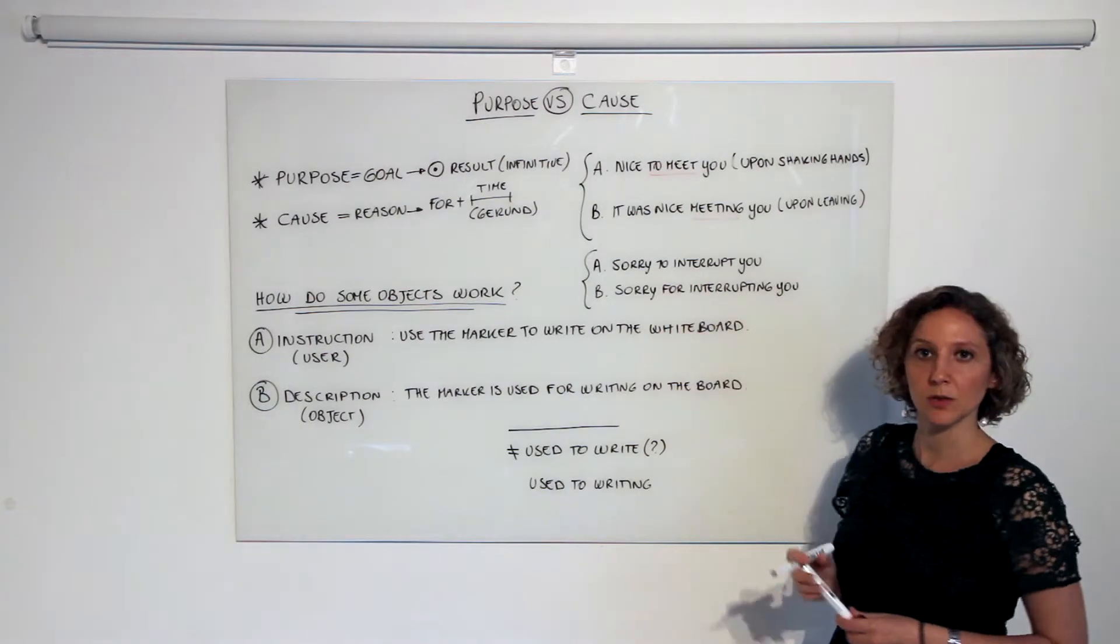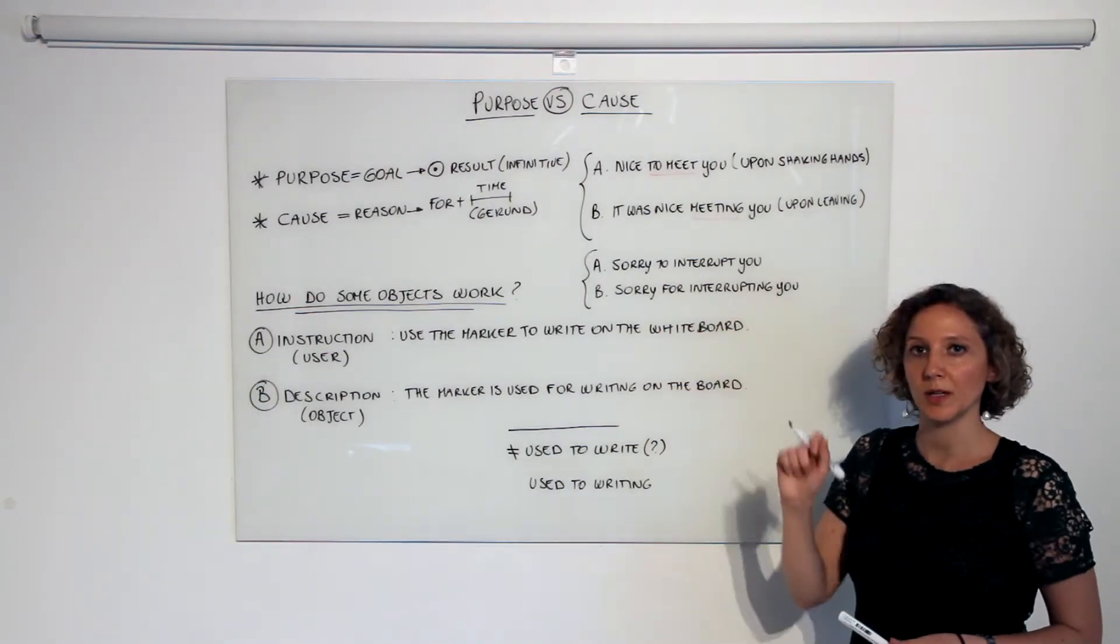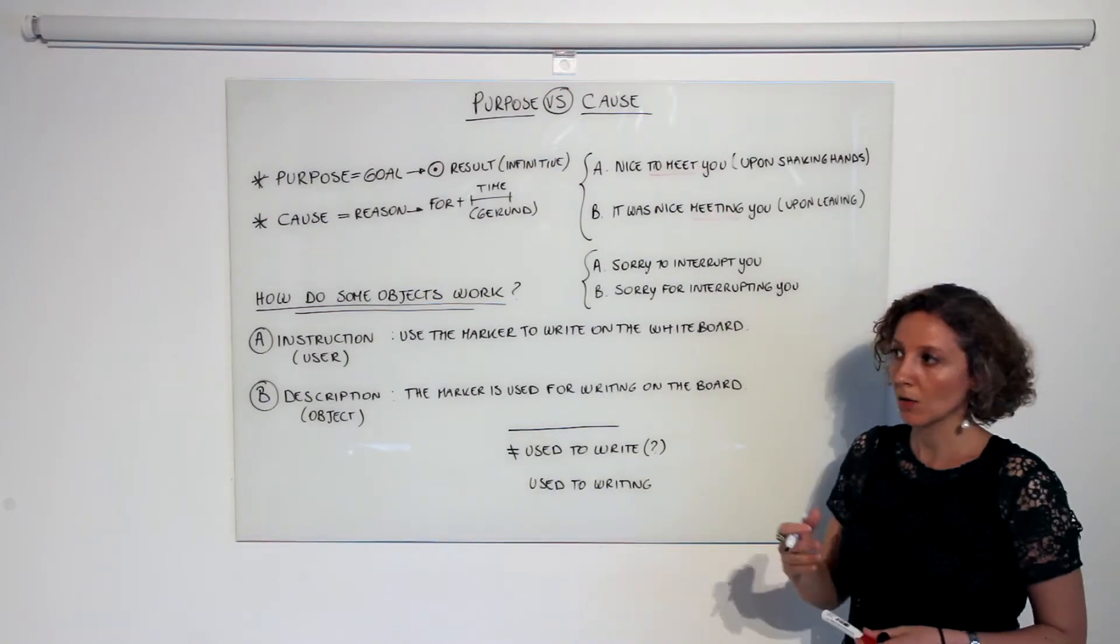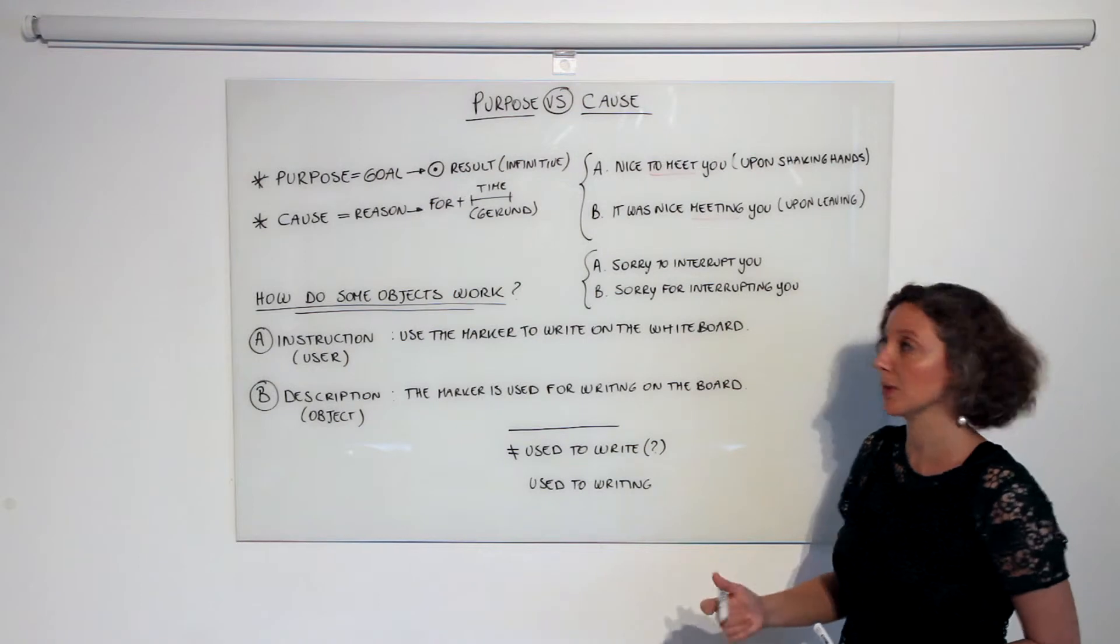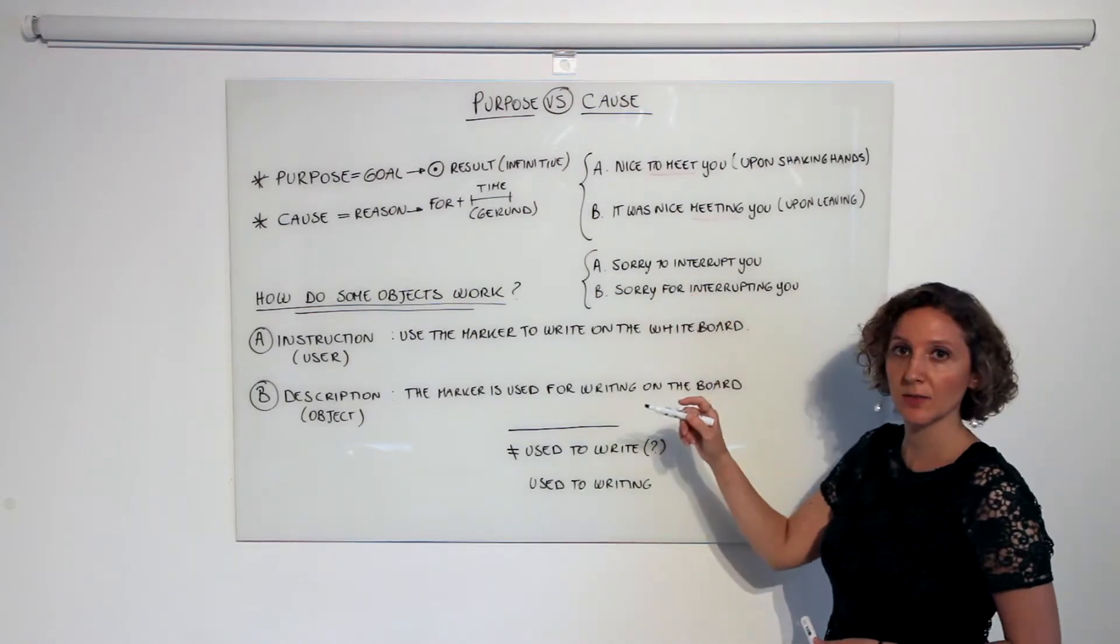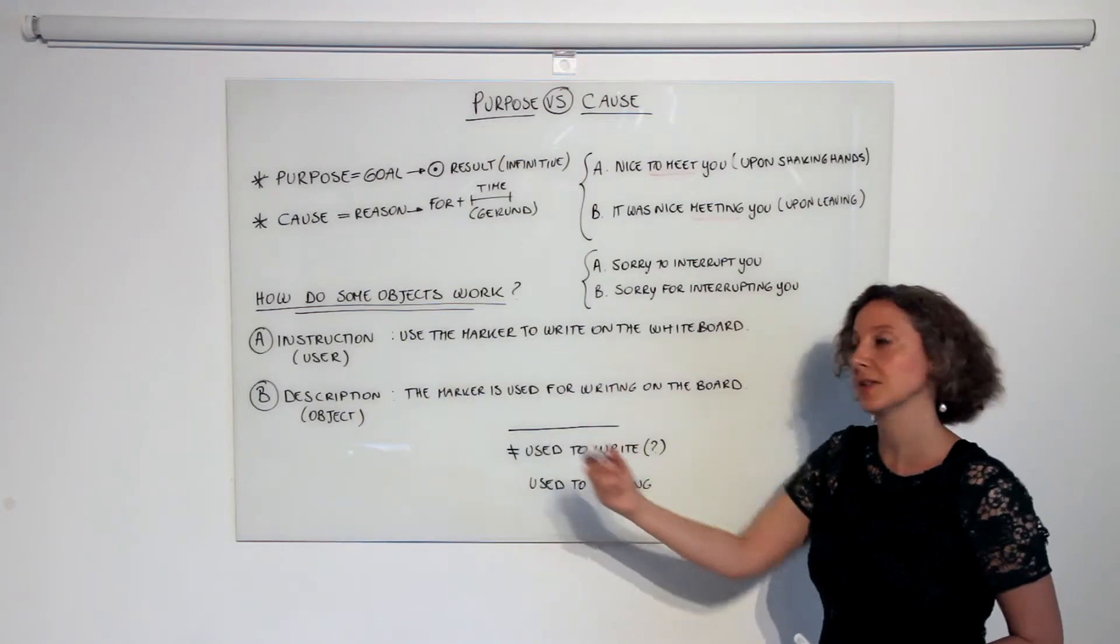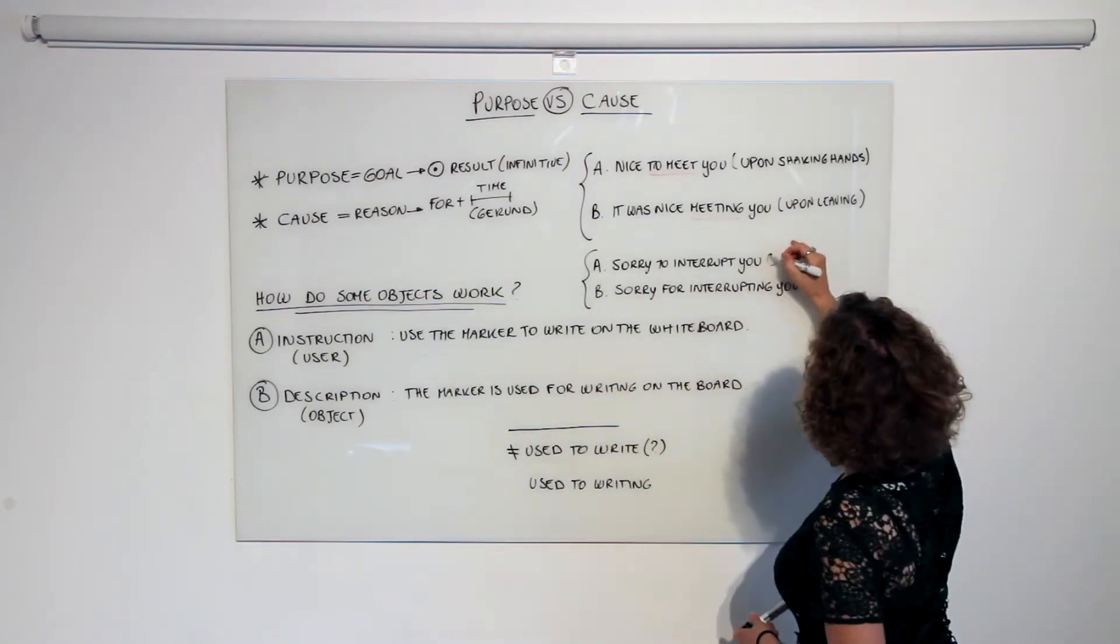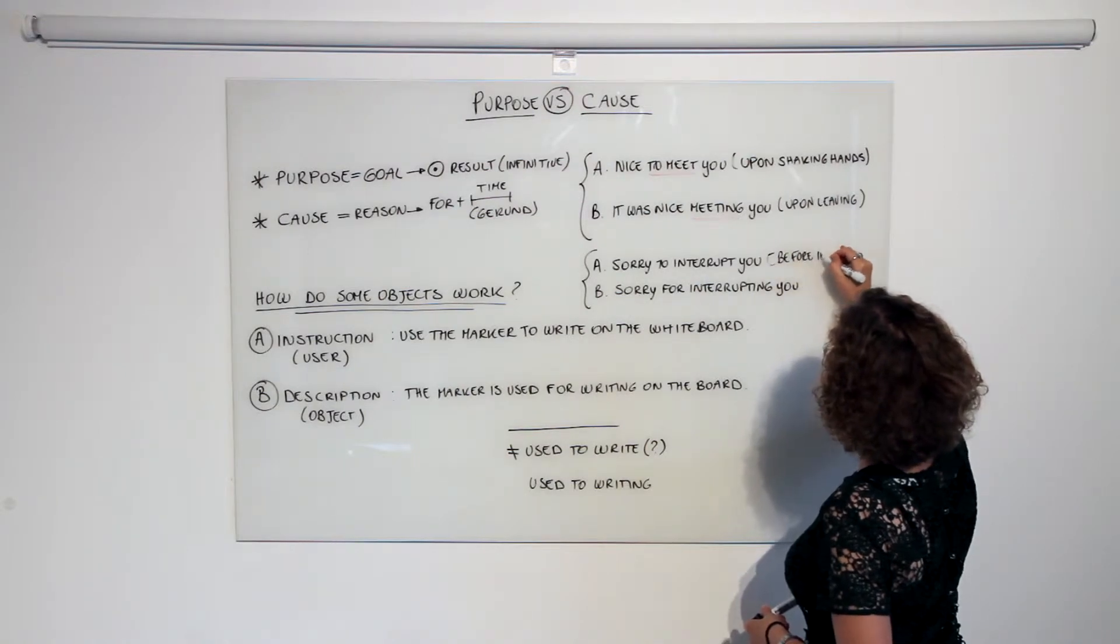'Sorry to interrupt you' is a sentence that I'm going to speak at the moment when I knock on someone's door or right after knocking on the door, before interrupting the person. I apologize in advance because I'm going to interrupt the person and this is the goal that I set to myself. So this is before interrupting.